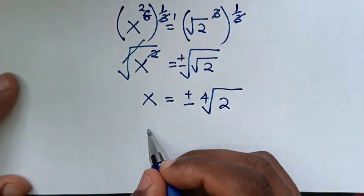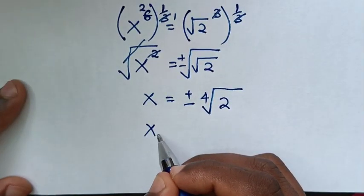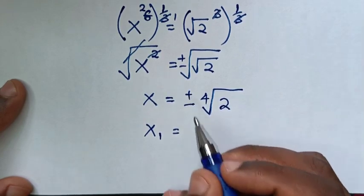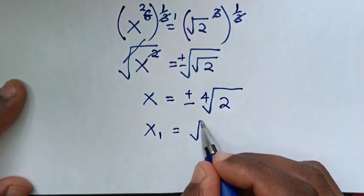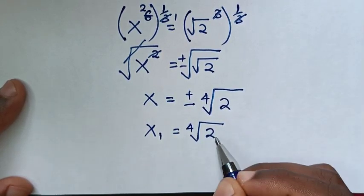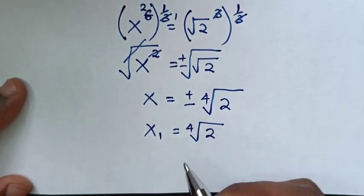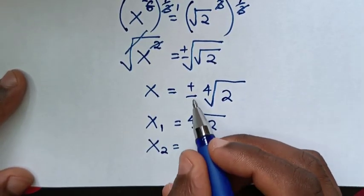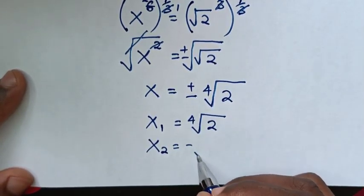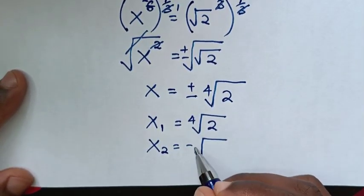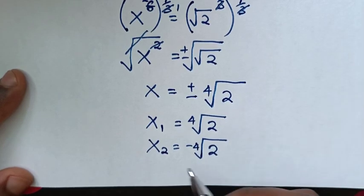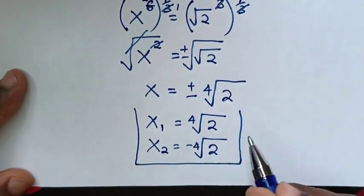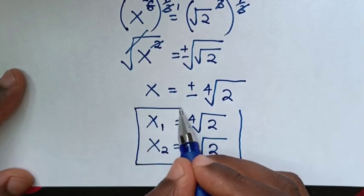Therefore we have two values of x: the first value of x is positive fourth root of 2, and the second value of x is negative fourth root of 2. So these are all the values of x in this problem.